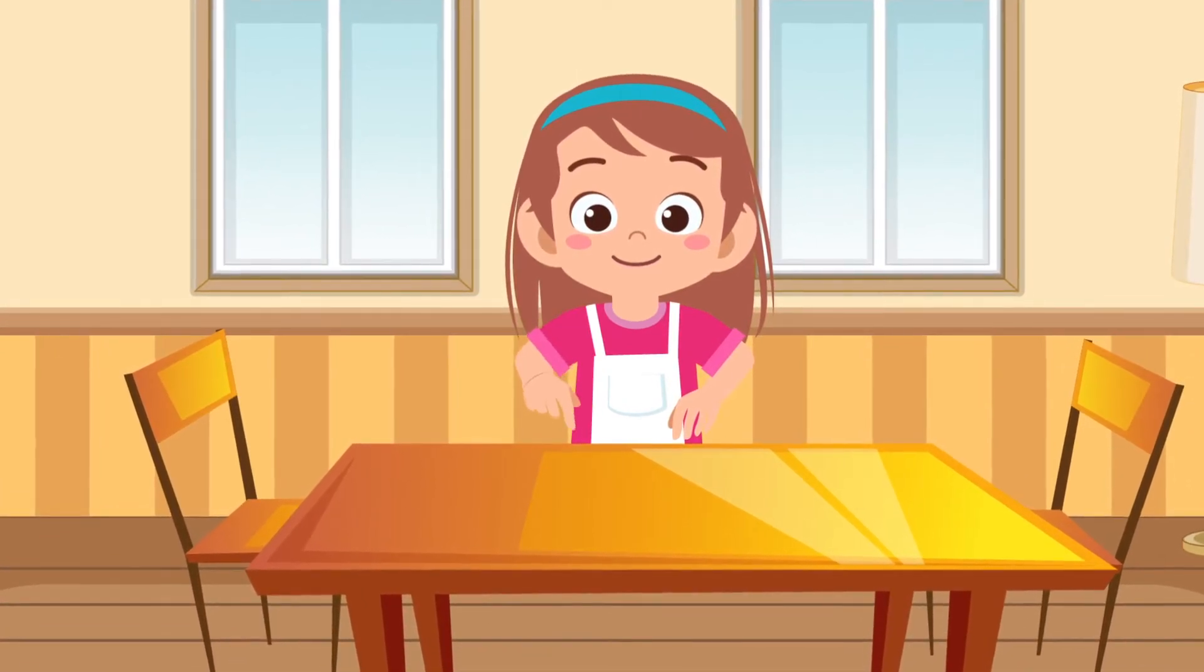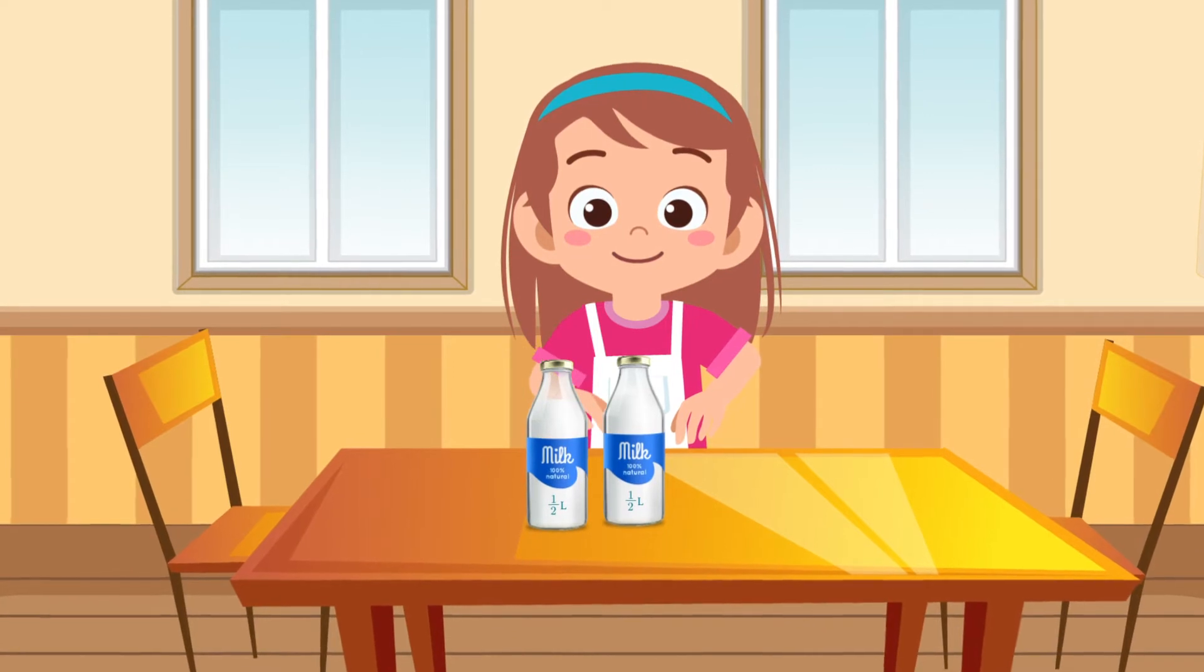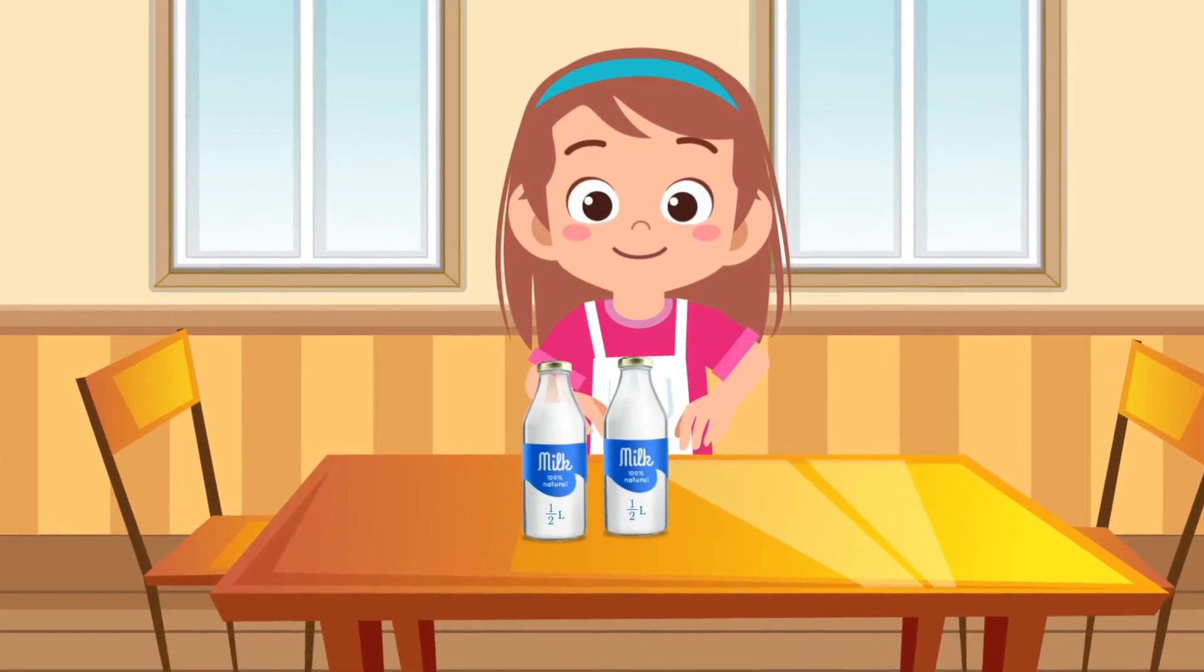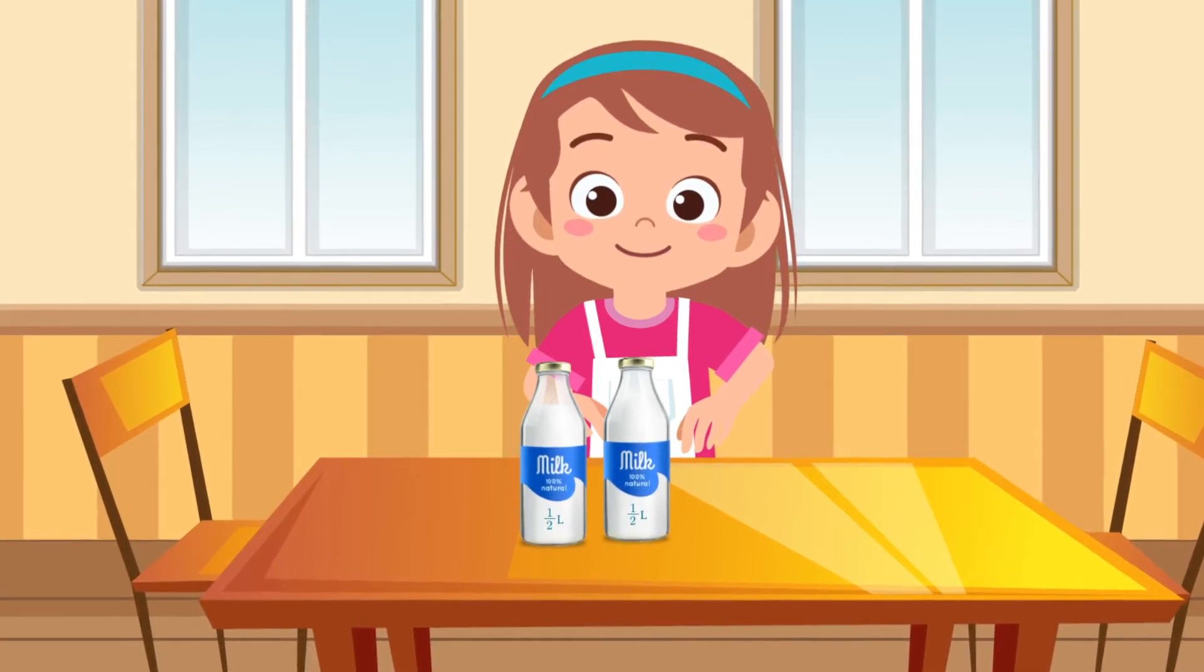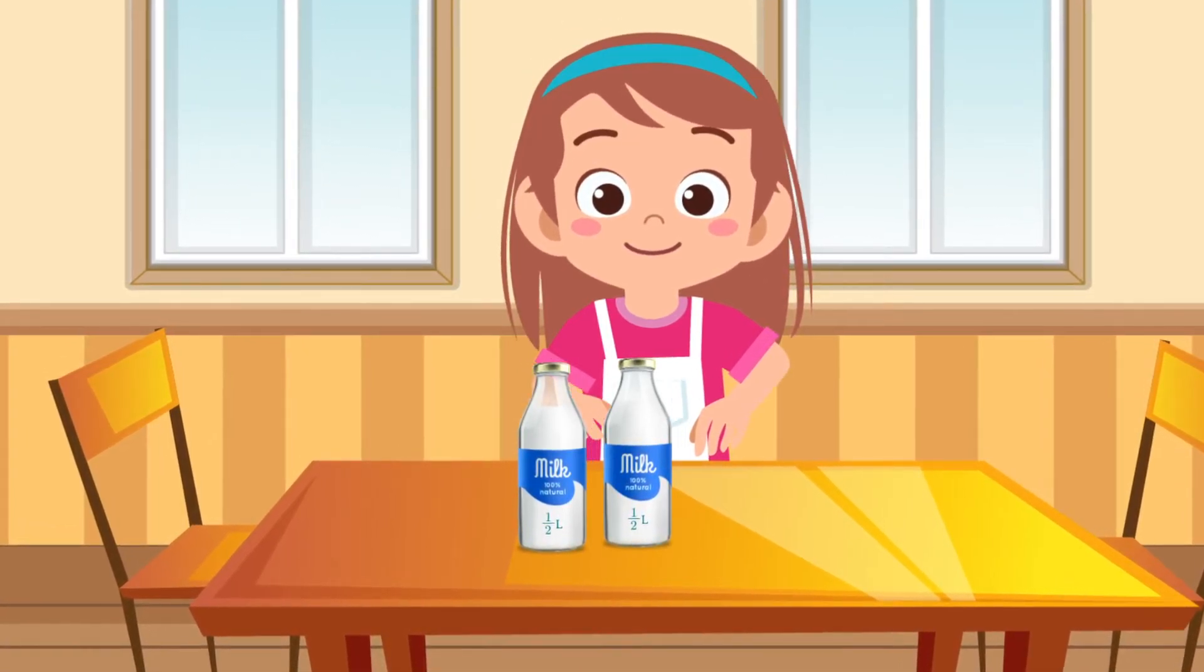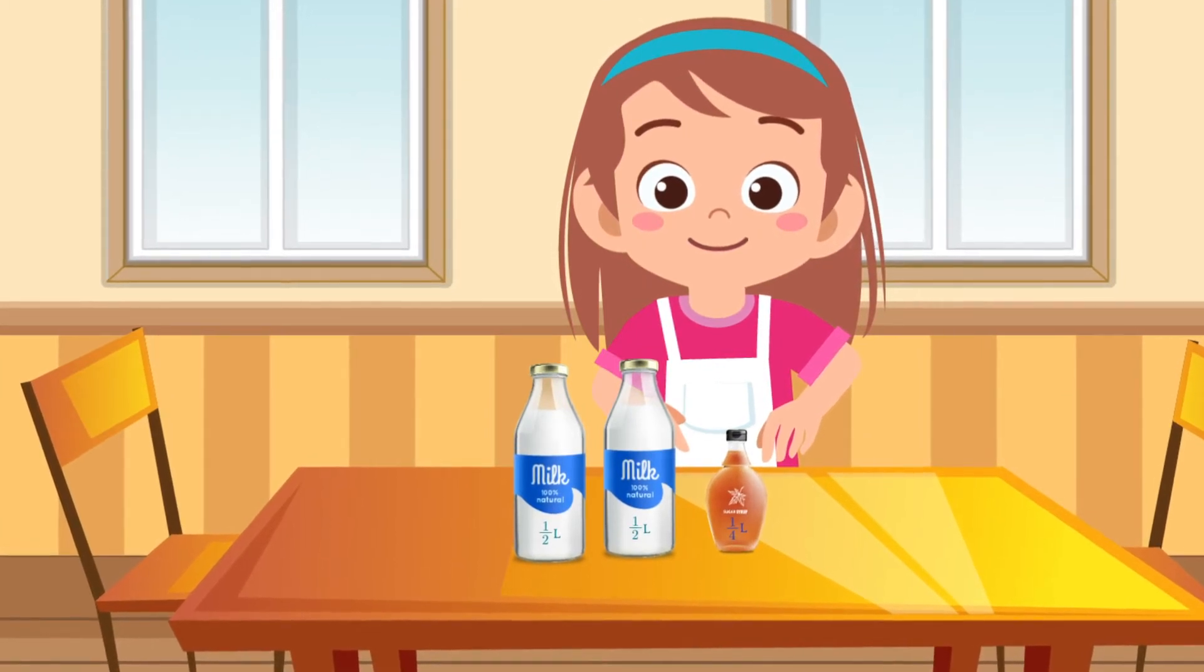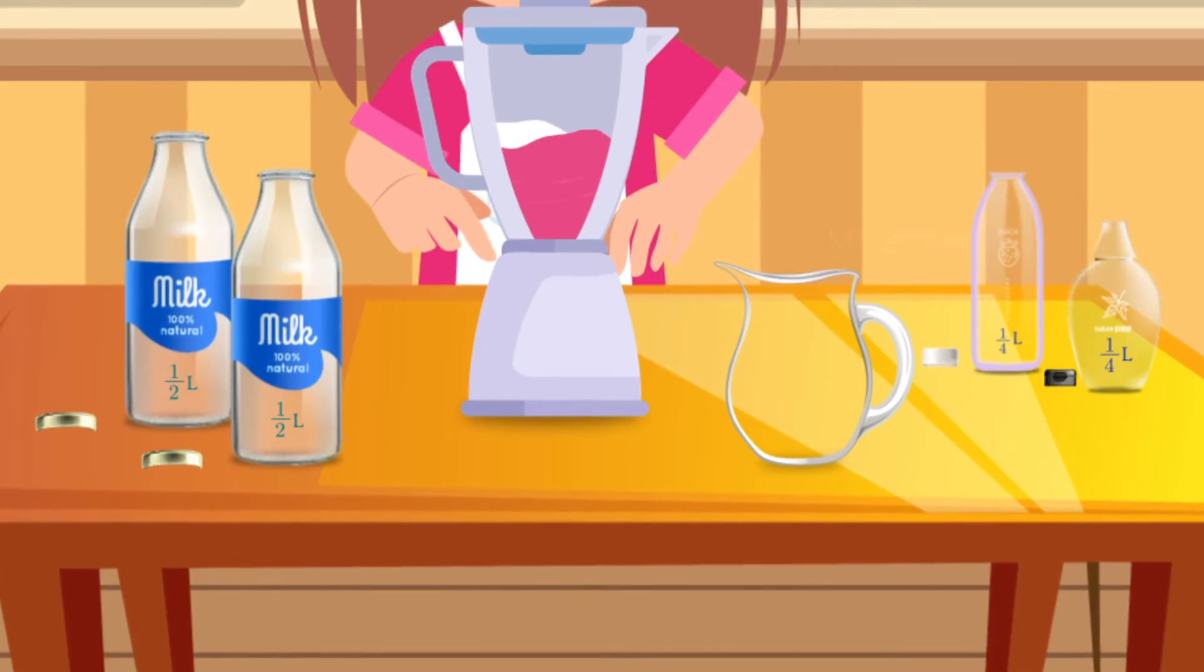Anu used two bottles of milk, each half liter in quantity, to make a milkshake. In addition to milk, she added 1/4 liters of sugar syrup and 1/4 liters of strawberry juice in a mixer.